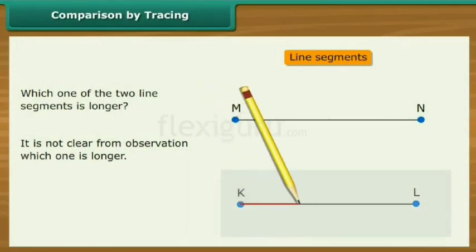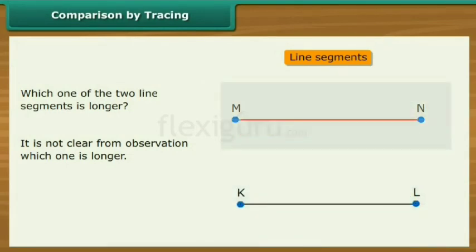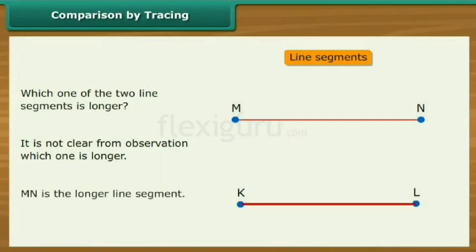Therefore, trace KL on tracing paper. Place it on MN. It is clear that KL is smaller than MN. Hence, MN is the longer line segment.